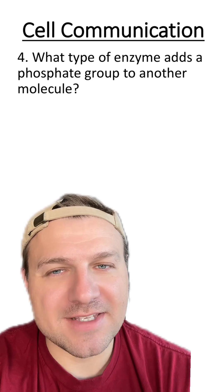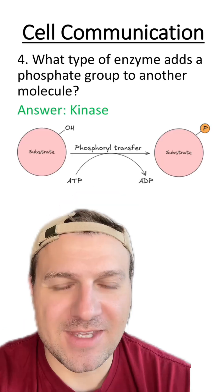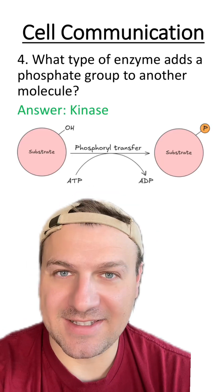Number four, what type of enzyme adds a phosphate group to another molecule? Typically, they're adding these phosphate groups to proteins. These enzymes are known as kinases.